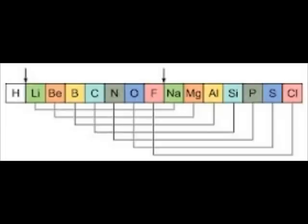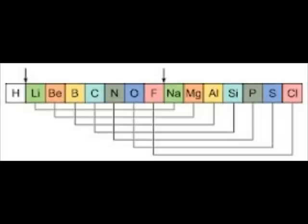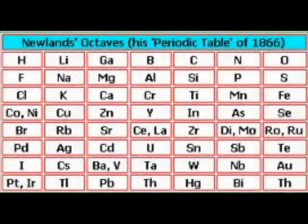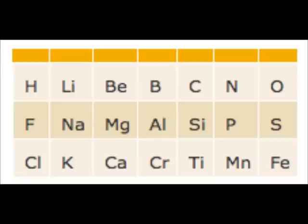Newland's table showed a repeating pattern of properties but it had a few problems such as uranium, U, was put in completely the wrong place. Newland's got the relative atomic mass wrong. He also put iron in the same group as oxygen.